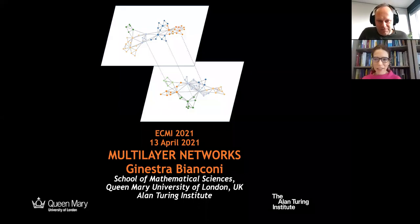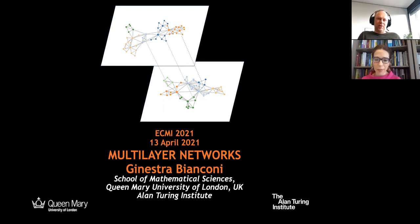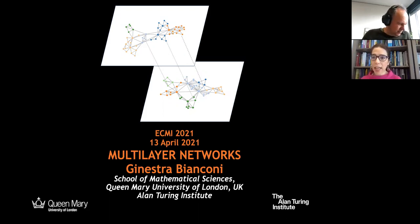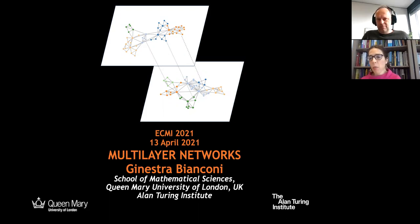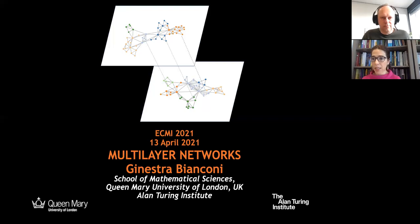I'm glad to be here. Today I want to speak about multilayer networks, that is a topic that has been the focus of my research for some years now. This is a field which sparked from what is called network theory or network science, which is a kind of modern interdisciplinary version of graph theory, in which one speaks about networks instead of graphs. Networks are the representation of complex systems, which might range from the brain to social networks.